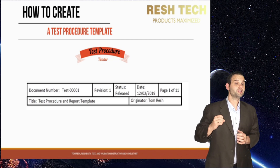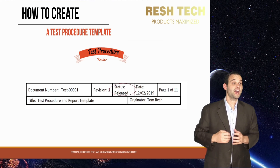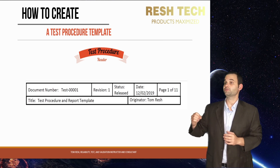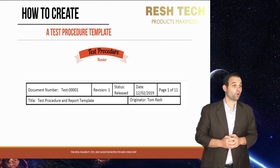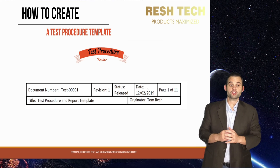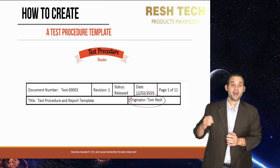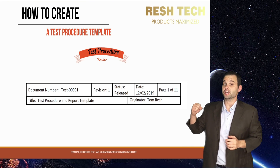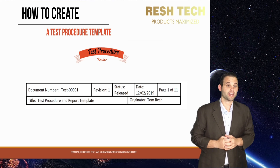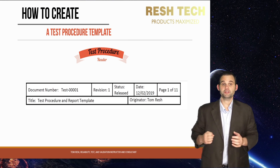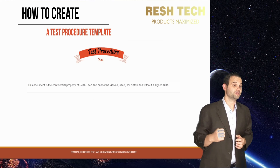Make sure you are viewing a test procedure that has a status of release and not under review, draft, or obsolete — or you might not be running the test to the required latest testing requirements. The header should also include the date the document was released, the author of the test procedure, and a page number for each page, using a format such as page 1 of 14. You also need to include a footer, which is where you put things such as a confidentiality statement.